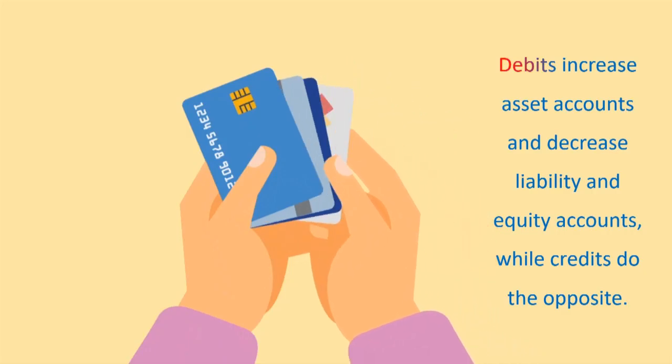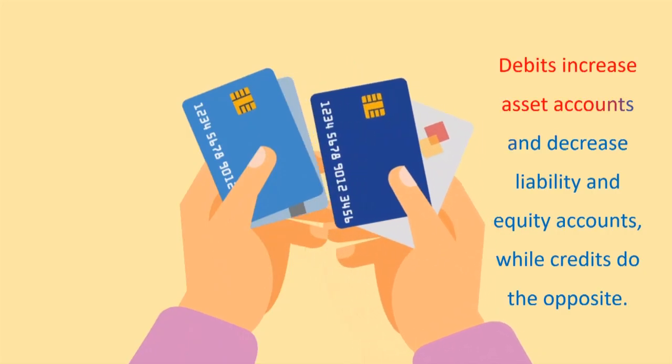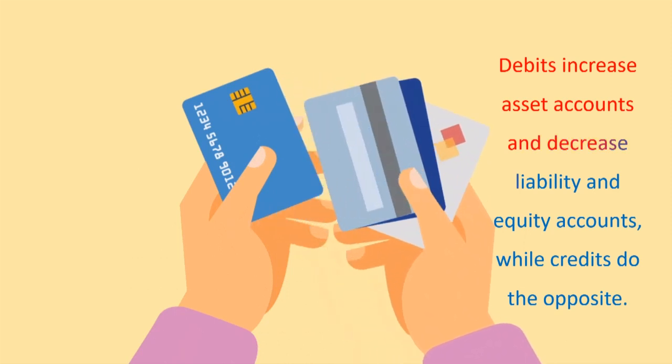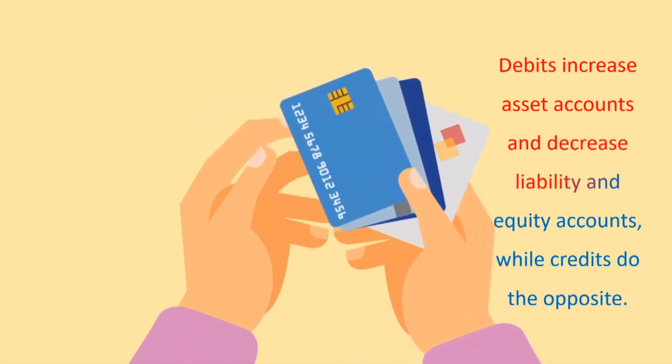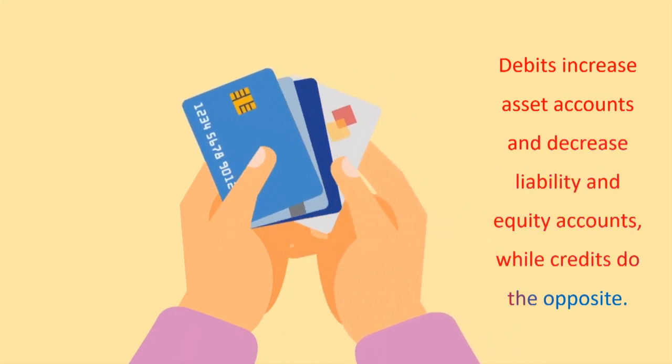Debits increase asset accounts and decrease liability and equity accounts, while credits do the opposite.